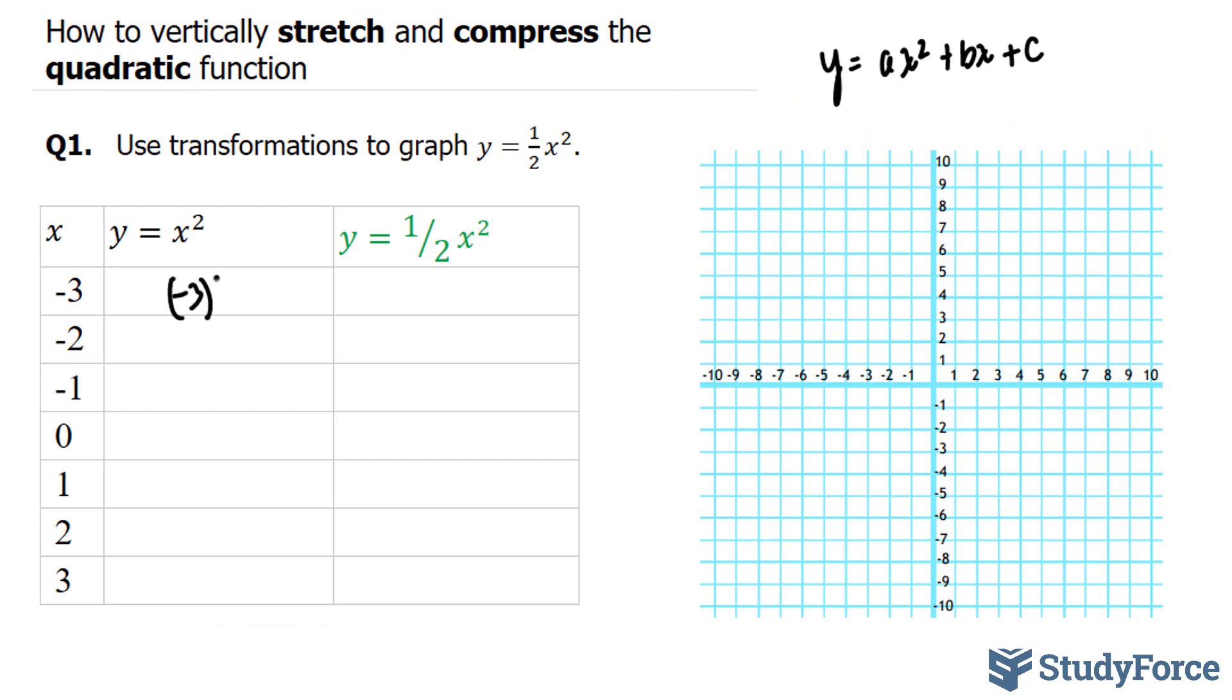Negative 3 to the power of 2 is equal to 9. Negative 2 to the power of 2 is equal to 4. Negative 1 to the power of 2 is equal to 1. 0 to the power of 2 is 0. And similarly, 1, 2, and 3 are the same thing as negative 1, negative 2, and negative 3: 1, 4, and 9.